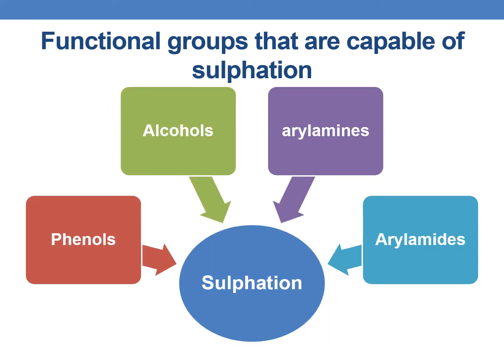Now, the functional groups that are capable of undergoing sulfation are majorly phenols, alcohols, arylamines, and arylamides — these undergo sulfation conjugation.